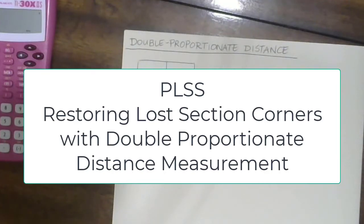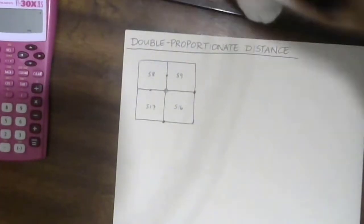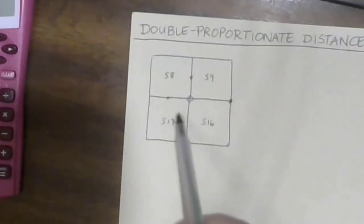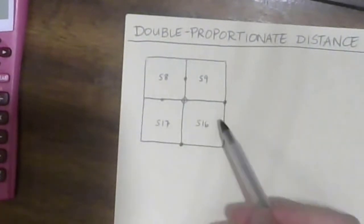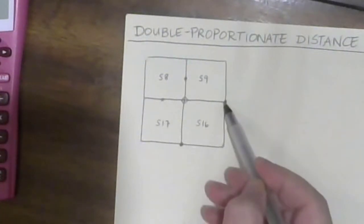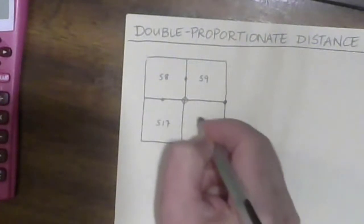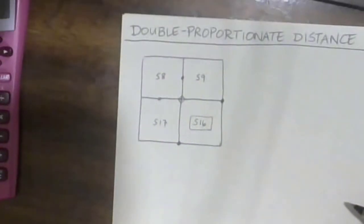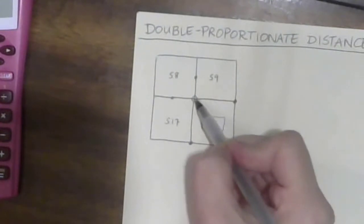This is an example that uses double proportionate measurements to find a lost corner. In this case, you can see that the lost corner is actually an intersection of four sections. You can see that we have the closest two corners of this section in question — this is maybe the property that is for sale. Now, we don't have this corner. This is what's lost.